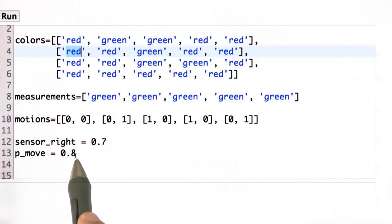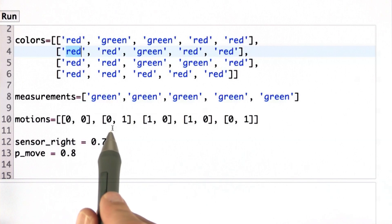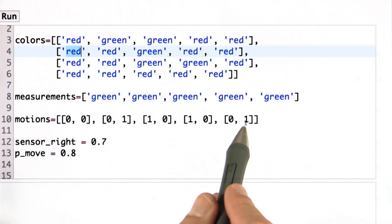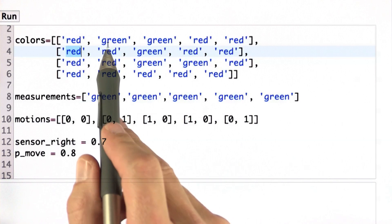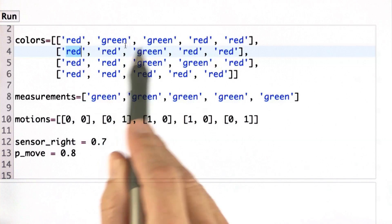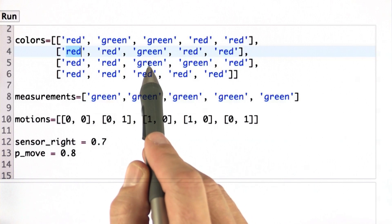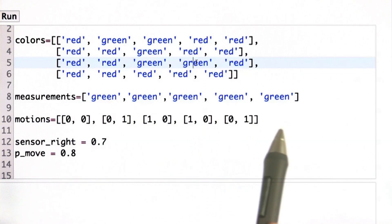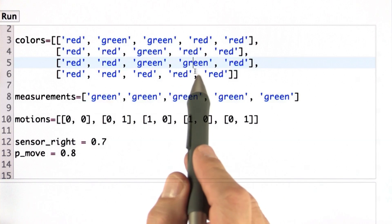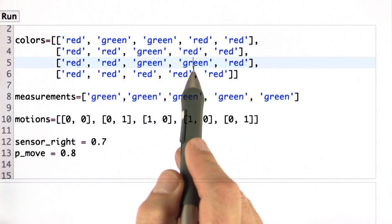I set it to 0.7 and 0.8 over here. Now if we look at the sequence green, green, green, green, green, where we first don't move at all, then move right, down, down, right, you'll find that the most likely match in this world is we first sense this green over here, we then move right to this green, we move then down to this green, further down to this green, right to this green over here. So this would be the cell with the largest posterior probability. It is the third row and the fourth column.